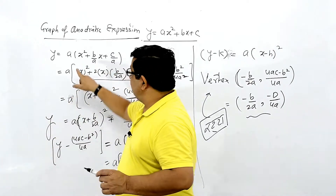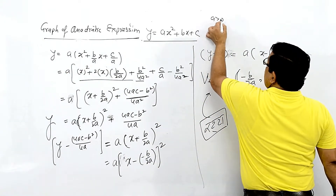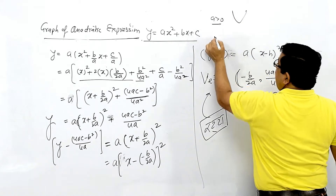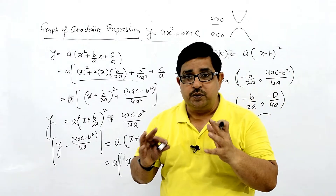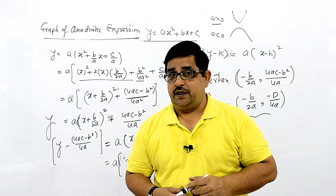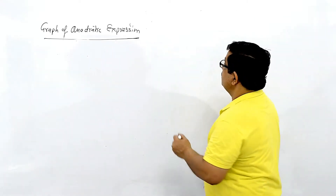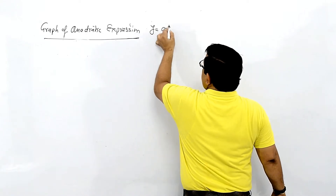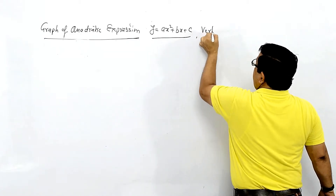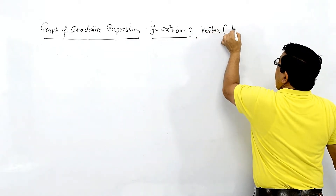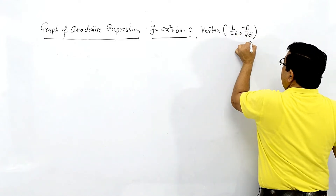If A value is positive, the parabola opens upward directly. If A is negative, it opens downward. For any y = ax² + bx + c, the vertex coordinates are directly (−b/2a, −D/4a) where D is the discriminant.